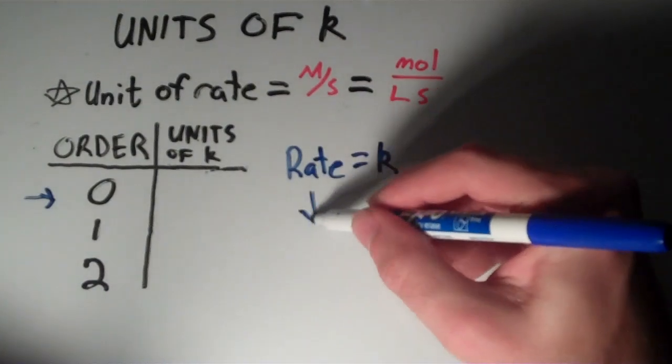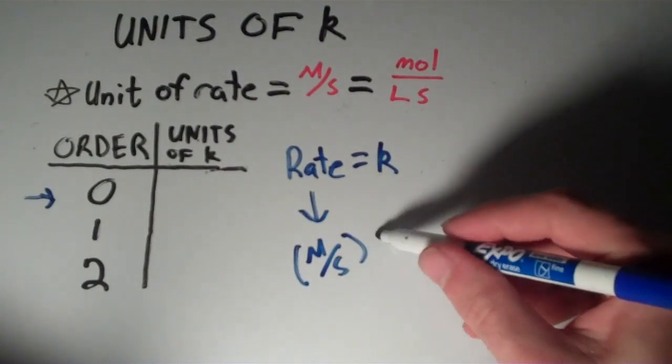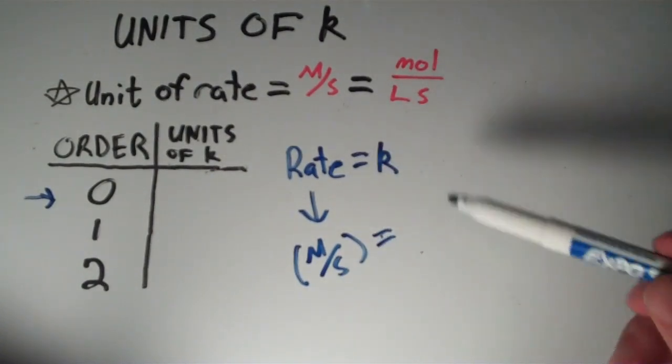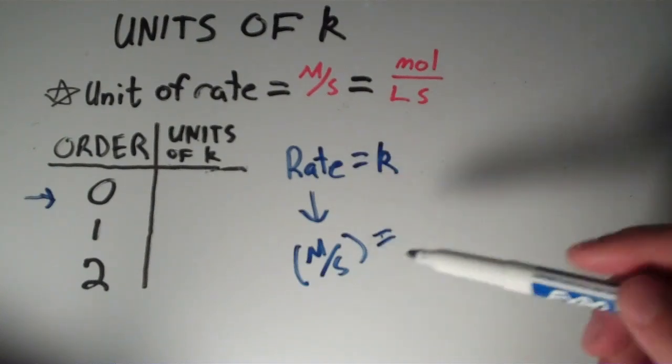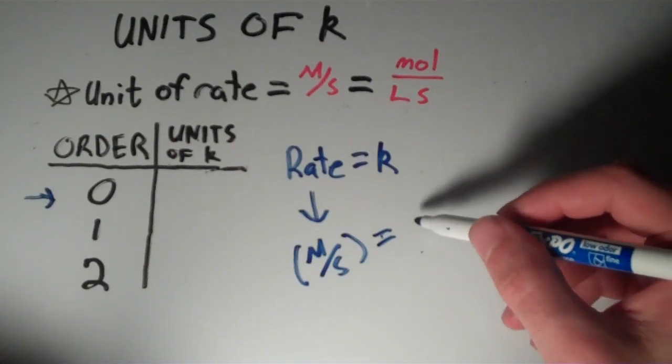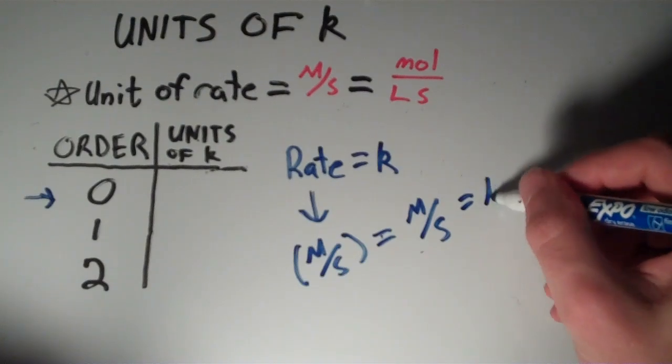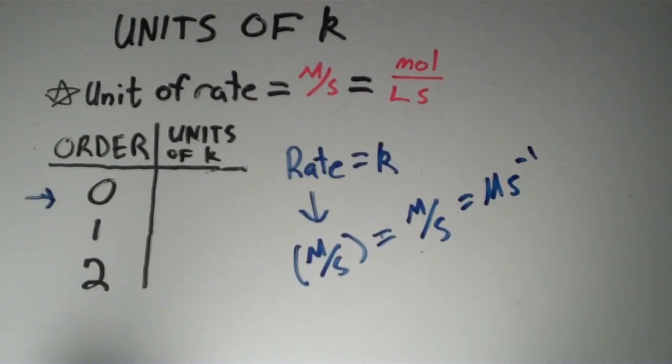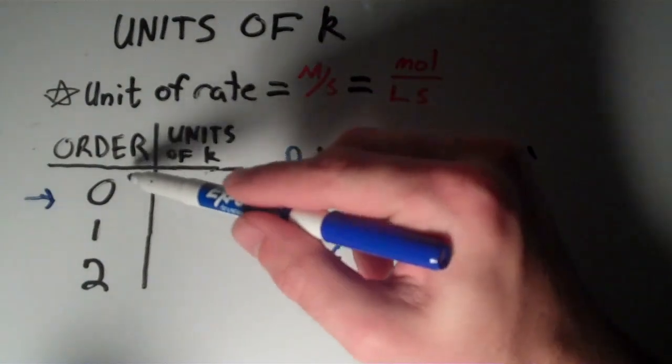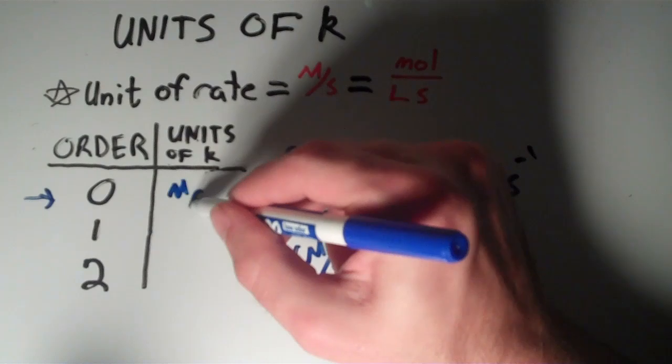We just established that the units of rate are molar per second. If the rate is equal to the rate constant, and the rate is in molar per second, then the rate constant must also carry the units of molar per second, or M·s⁻¹. For the zero-order reaction, the units of K are M·s⁻¹.